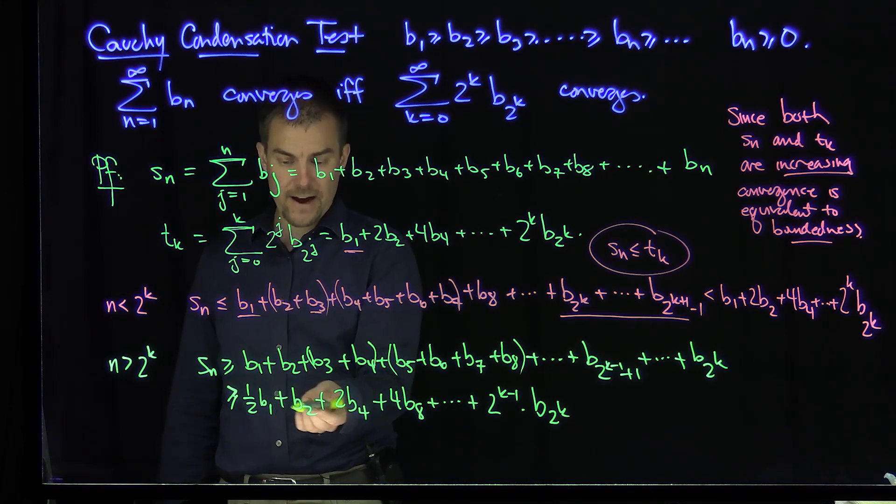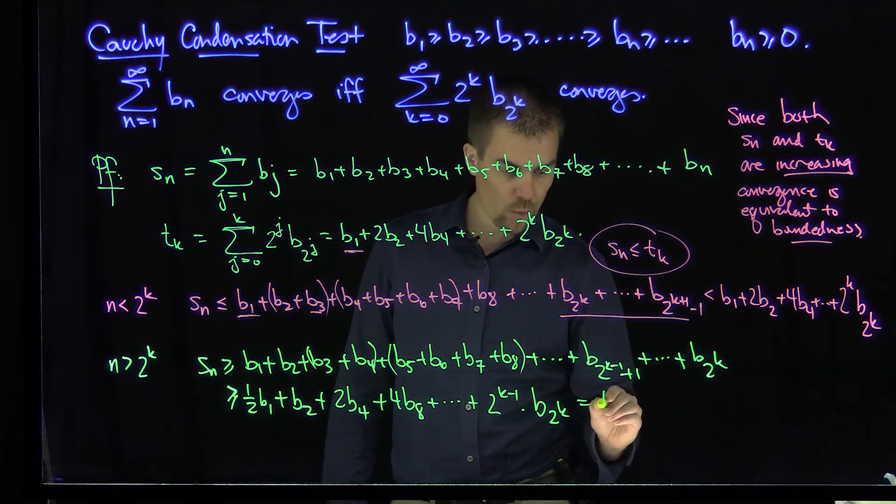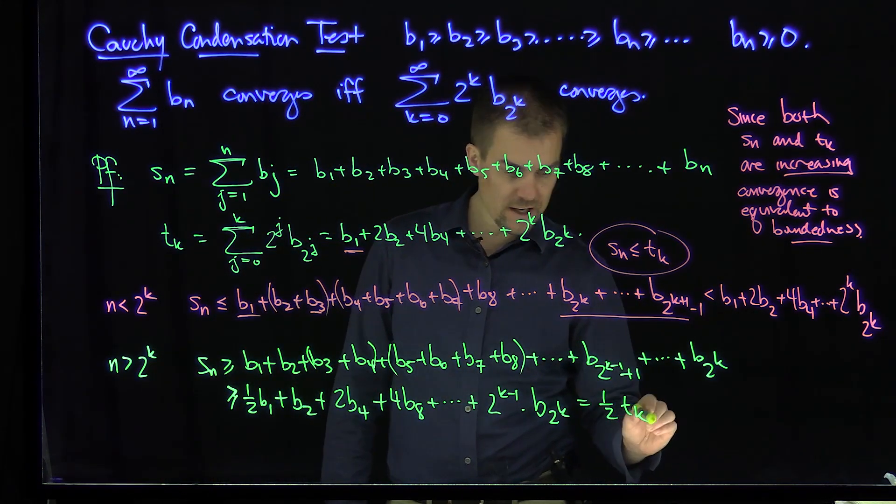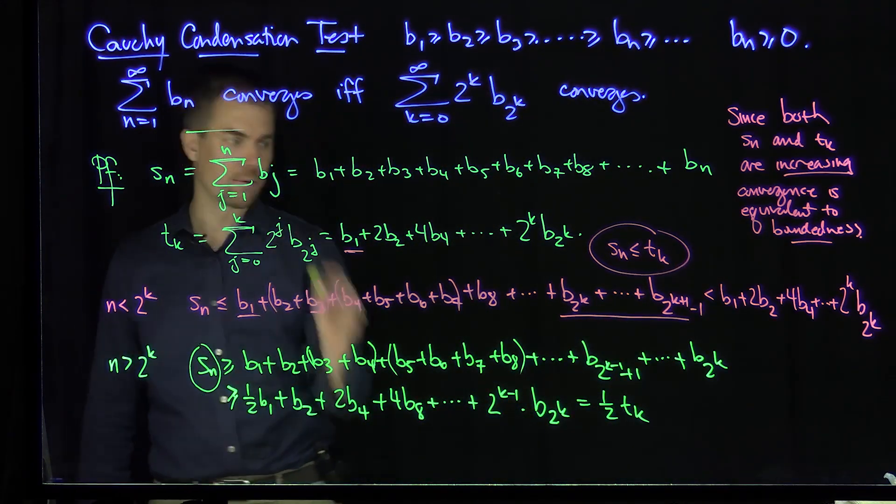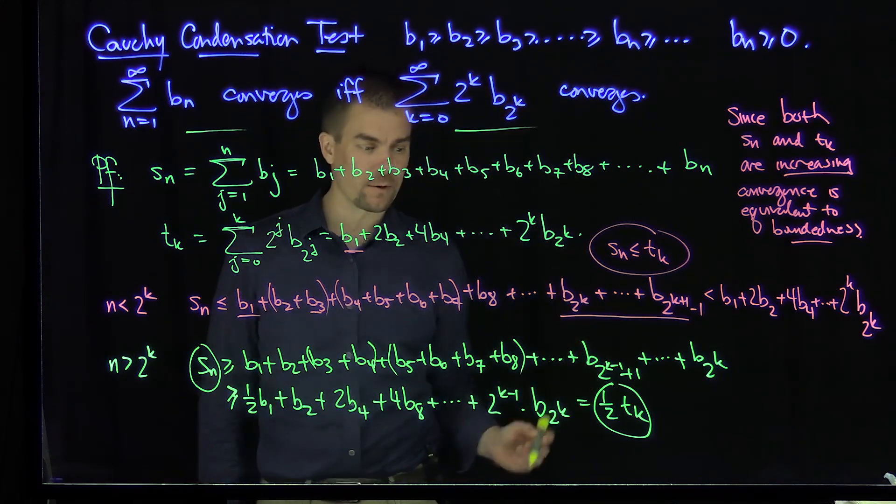Now that's not exactly Tk, that's a factor of a half off of it. So this is exactly one half of Tk. So now we can conclude that if the Sn are bounded, if this series is bounded, then the Tk will be bounded and this series will converge.